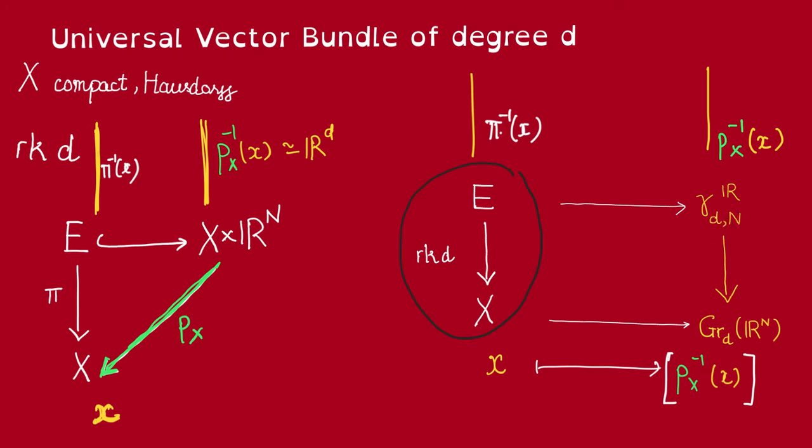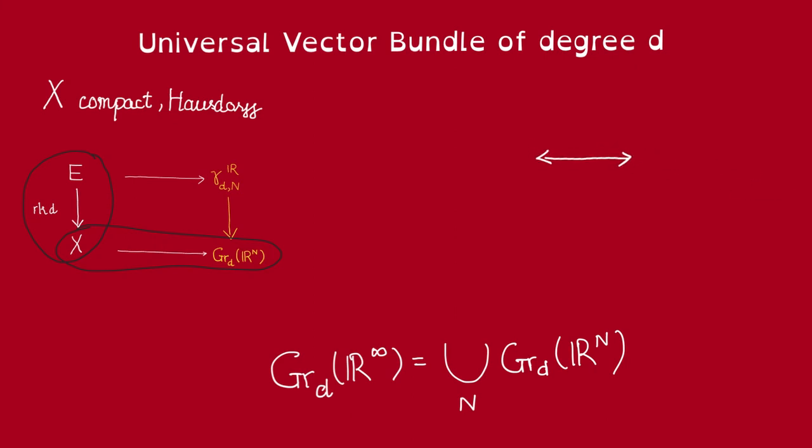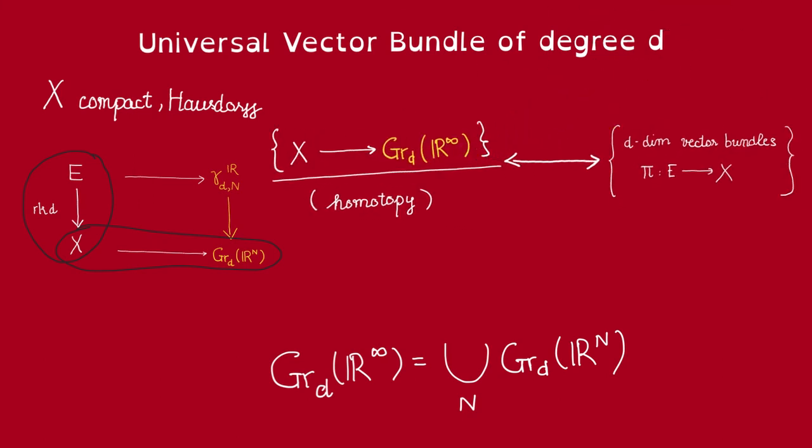Thus, vector bundles of rank d over X correspond to maps from X to the d-Grassmannian of R^n. But here, for each vector bundle E, we are using a different n. And we want one target, right, for every different vector bundle. So we'll instead just take the direct limit of all of these different d-Grassmannians. With that definition, we then have a bijection between d-dimensional vector bundles over X and maps from X to this Grassmannian up to homotopy.